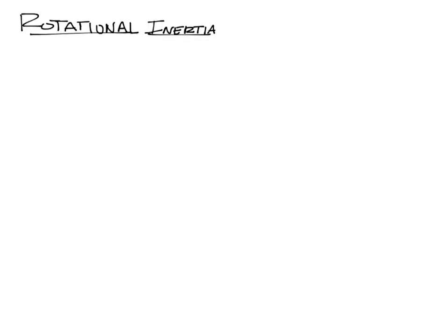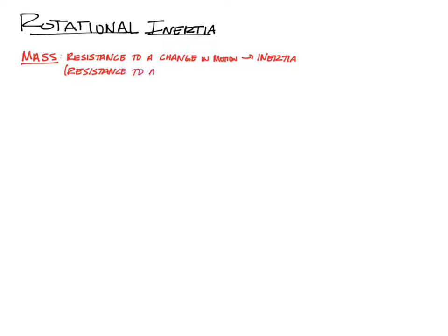Another name for it is moment of inertia. When we talk about mass linearly, as physicists, we talk about mass as resistance to a change in motion, and we define mass as inertia. Another way to say that is it's a resistance to an acceleration. Anytime we want to speed an object up, slow it down, turn it left, turn it right, make it go in a circle, we have to fight against this resistance. We're pushing against inertia.